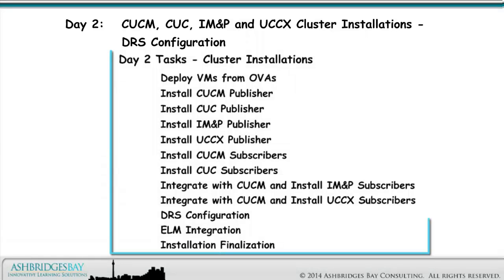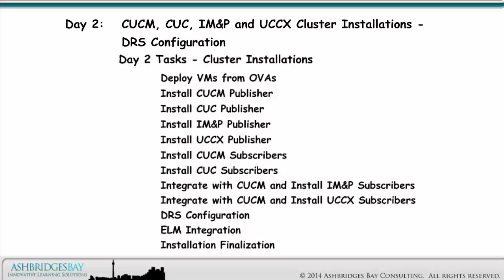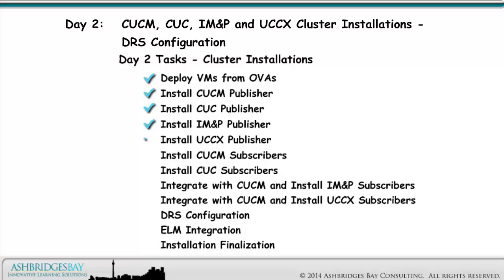Here are the tasks for our Cisco Collaboration cluster installation and integration. On Installation Day — a literal day — we install our CUCM, CUC, IM&P, and UCCX clusters. Deploy all of the VMs from OVAs and attach the installation media. Install our CUCM, CUC, IM&P, and UCCX publishers.